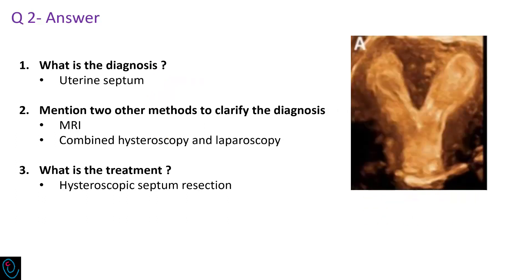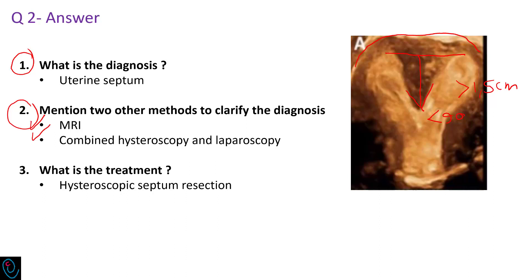Answer to the second question: the diagnosis is uterine septum, because internal indentation is more than 1.5 cm, the angle of internal indentation is less than 90 degrees, and there is no or very minimal external indentation. Two other methods to clarify the diagnosis include MRI, or a combination of hysteroscopy and laparoscopy. The treatment of uterine septum is hysteroscopic septum resection.